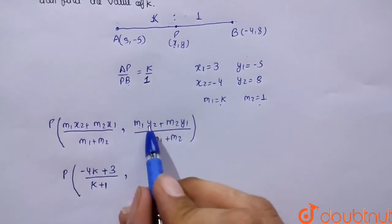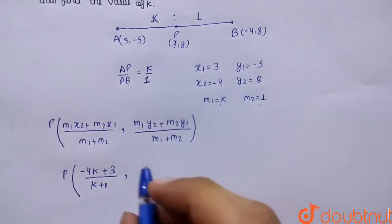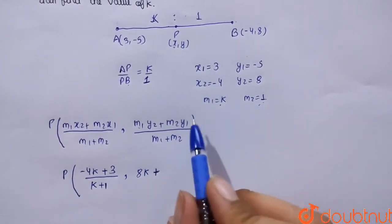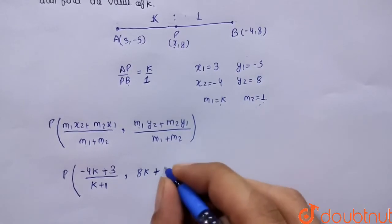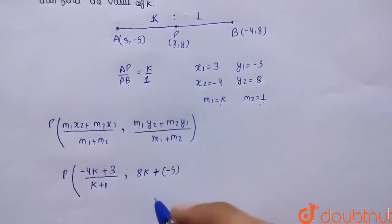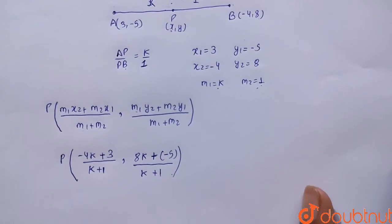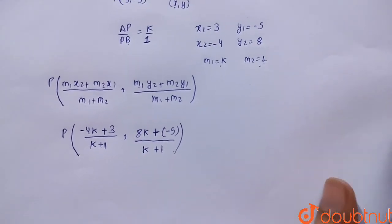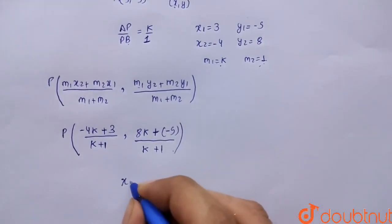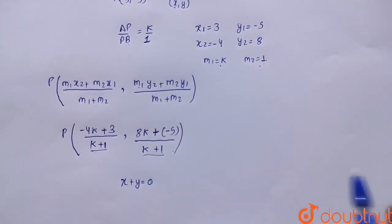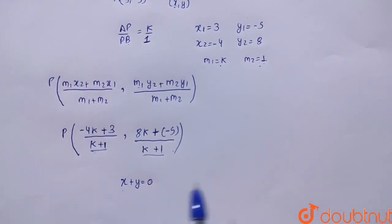Similarly, the y-coordinate is m1 into y2: m1 is k and y2 is 8, so this becomes 8k, plus m2 which is 1 and y1 which is minus 5, giving minus 5, whole upon k plus 1. Now we have the x and y coordinates of P. Since P lies on the line x plus y equals to 0, we substitute these values.